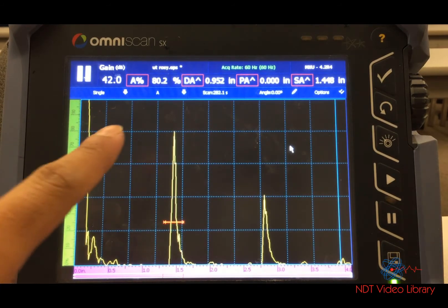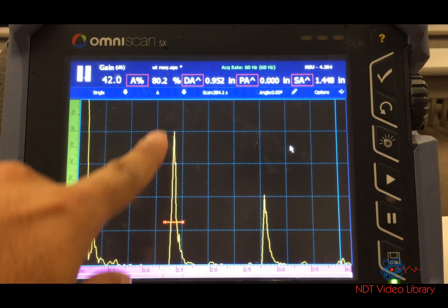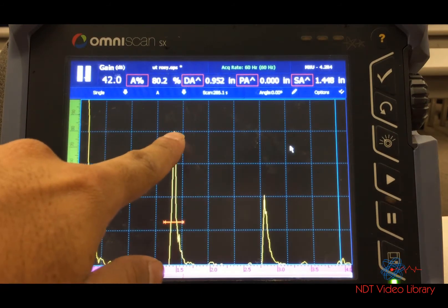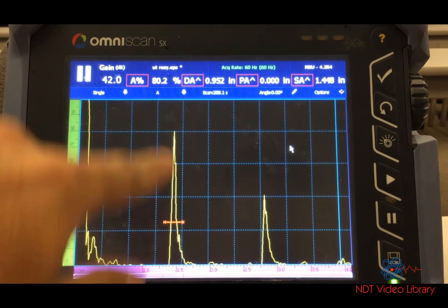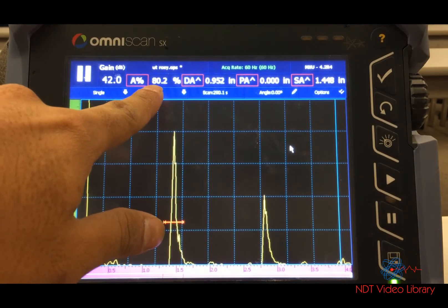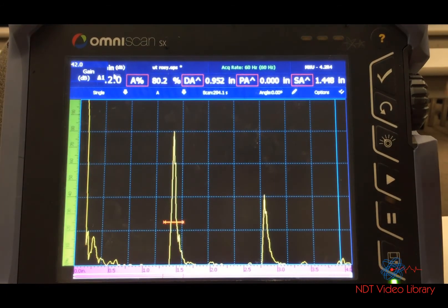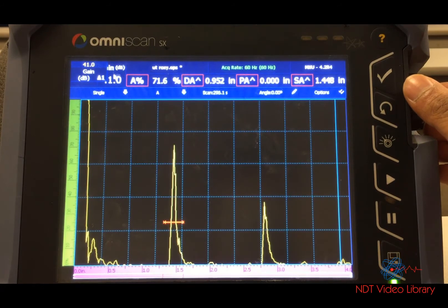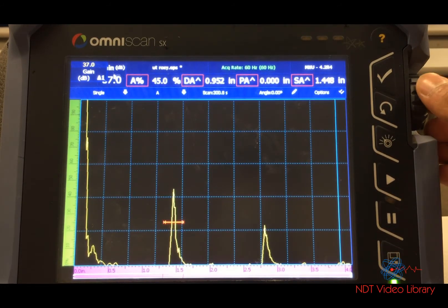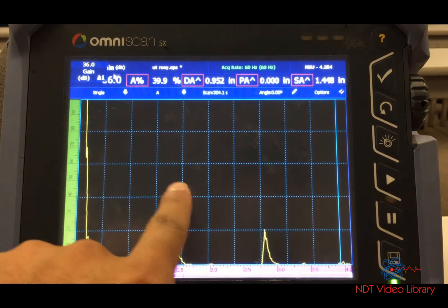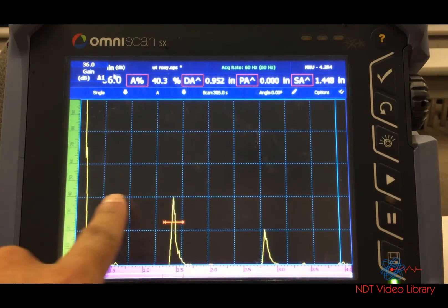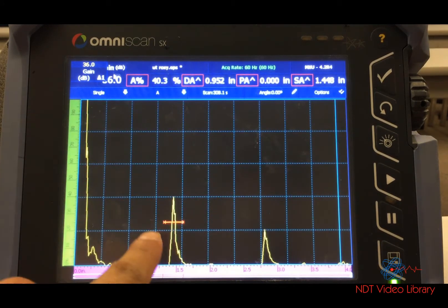What we're looking at on the screen is this signal amplitude at about 80 percent. The gate tells me it is 80.2 percent. Now watch this - when I click on gain and turn it down from 42 to 36, the signal amplitude drops exactly to 40 percent. That is half of it.